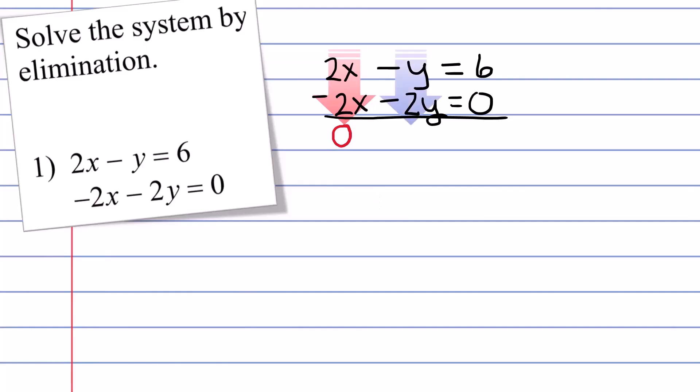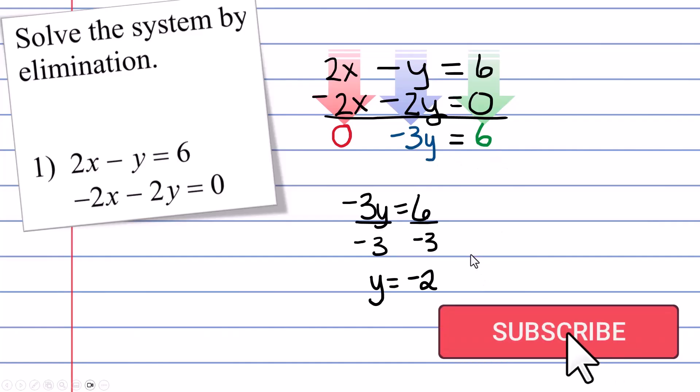Now when I combine the y's, in this case, I'm going to end up with negative 3y and when I combine the six and the zero, I get a six. So we're going to line these equations up on top of each other and we are going to vertically combine going downward. And the idea is to make sure one of them turns into a zero because now we have a real simple equation, negative 3y equals six. I can solve that pretty quickly in one step and I get y equals negative 2.